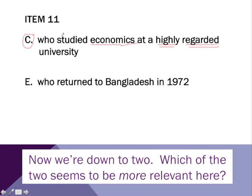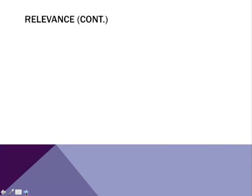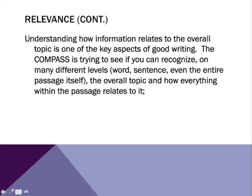Notice what we did in this particular set of strategies — we actually had to go back to the context, and we also had to look at our answer choices to basically make a decision where the text doesn't explicitly or directly tell us what the answer needs to be. So the idea of strategy is really beginning to think about: if I have to find or add information, is it necessary, or does the information help improve the arguments that are being made? Those are the answer choices you're looking for. In relevance, this is really reflecting what we need in good writing — we have to understand how information relates to the overall topic. Can you recognize it on different levels: a word level, a sentence level, perhaps even the entire passage?